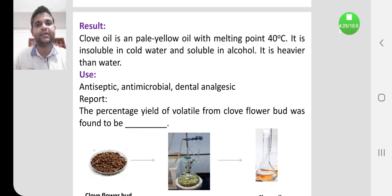By this steam distillation method, we have to collect the volatile oil from clove and calculate the percentage yield. As far as standardization is concerned, the clove oil should contain at least 15% v/w of volatile oil, which is indicative of the purity of clove flower bud. These are various aspects of clove flower bud.